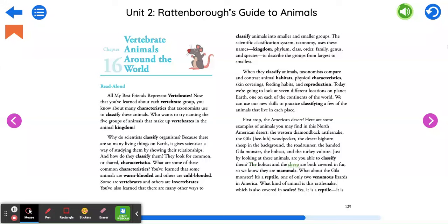The bobcat and the sheep are both covered in fur, so we know they are mammals. What about the gila monster? It's a reptile, one of only two venomous lizards in America.